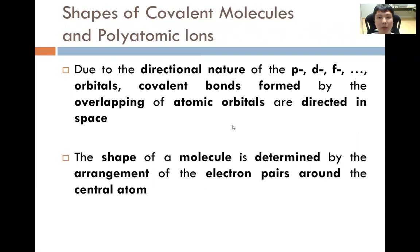So to begin with, we are basically talking about the shape of covalent molecules — molecules that form through covalent bonding. Due to the directional nature of the p, d, and f orbitals, covalent bonds formed by the overlapping of atomic orbitals are directed in space, and there will be a specific shape of the molecule. The shape of the molecule is determined by the arrangement of the electron pairs around the central atom.